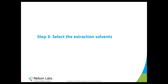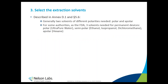The extraction solvents will also be recommended in this final draft. In the previous version, there was a lot of referral to part 12 for sample preparation, but this will be much less important in part 18. Extraction solvents are described in Annex D.1 and paragraph 5.6. Generally, two solvents of different polarities should be used — a polar and an apolar one — in line with part 12. For some authorities such as the FDA, three solvents will be needed for permanent devices: a polar, a semi-polar, and an apolar one.